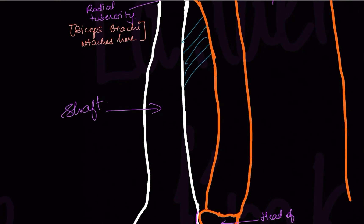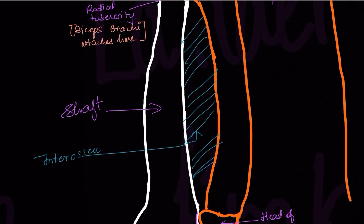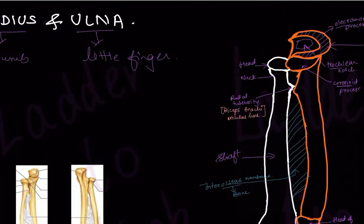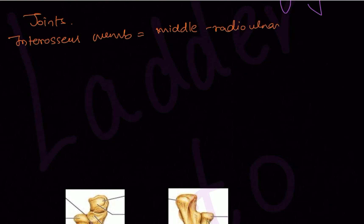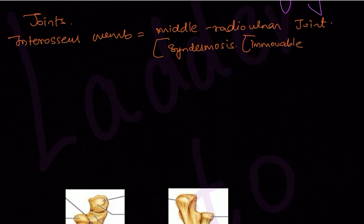Between the radius and ulna there is a membrane connecting both bones called the interosseous membrane. The term 'inter' means 'in between' and 'osseous' means bone, so the membrane between the bones is the interosseous membrane. The joint formed here is called the middle radio-ulnar joint, and its type is syndesmosis — that is, an immovable or fibrous joint.